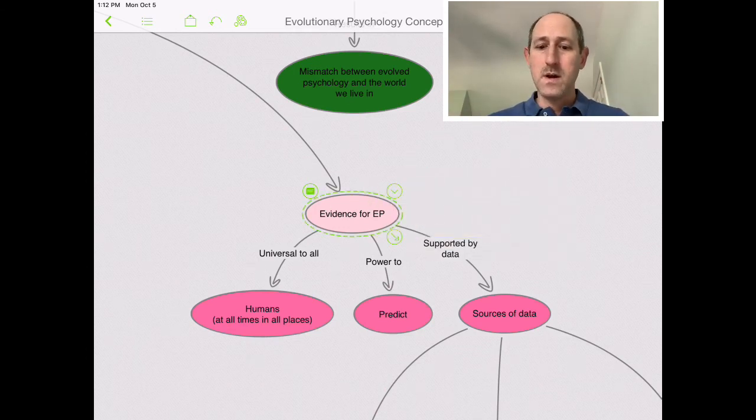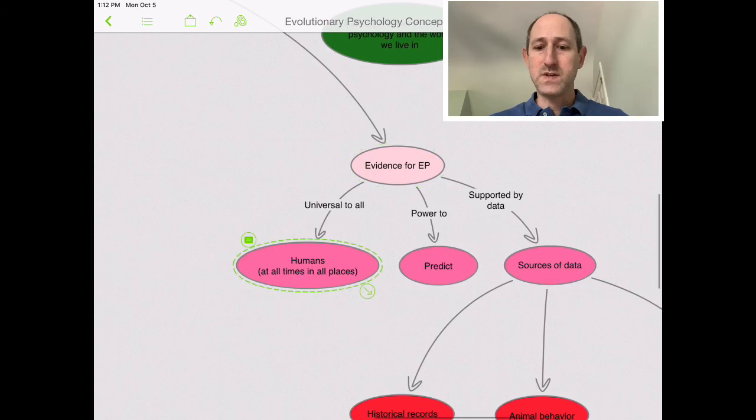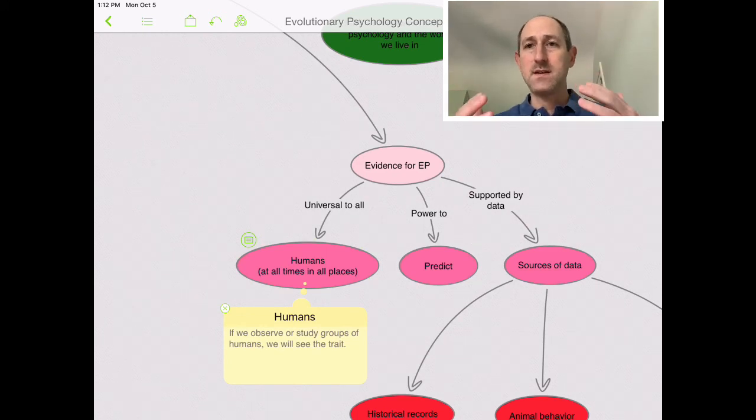So one thing we can do is say, is what we are seeing, whatever behavior or emotion that we're seeing humans take, do we see it most of the time, typical, all humans, all places, when you look closely enough? And if you do, then that's evidence that has some kind of evolutionary or biological basis that precedes the culture that we're in right now.